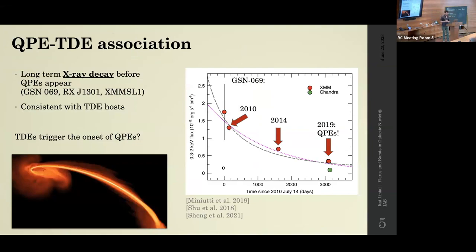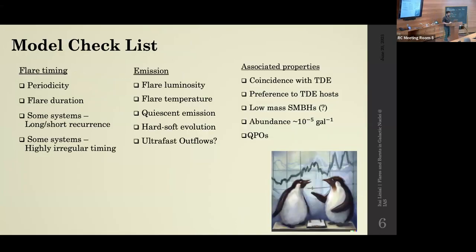There's also a lot of discussion about the possible association between QPEs and TDEs — we just heard about it in the context of GSN069. This is another thing we should be able to explain or at least suggest an association between the appearance of QPEs after what seems like a long gradual decay of X-rays, which may or may not be directly related to a bona fide TDE. Here's a checklist of features a QPE model should satisfy — it mostly overlaps with what Giovanni just mentioned — and while our model answers most of these, several features remain open questions.